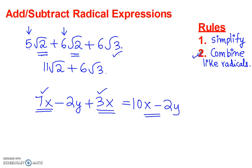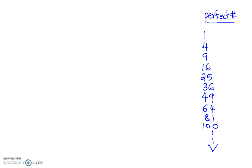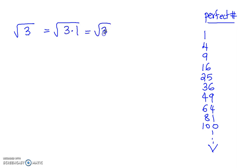So I just explained step number 2 first. Now before we can do step number 2, we have to make sure that our radicals are in the simplified form — that's step number 1. If you have radical 3, we know that we cannot split 3 anymore; it's just 3 times 1, so we know this is already in the simplified form.